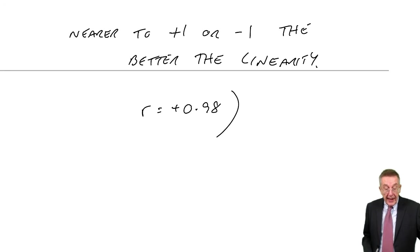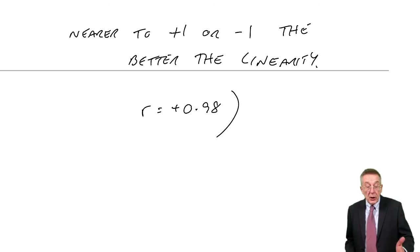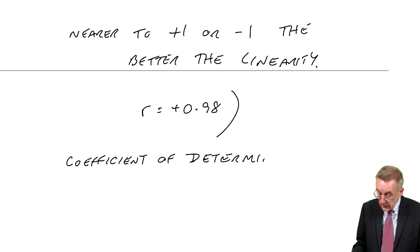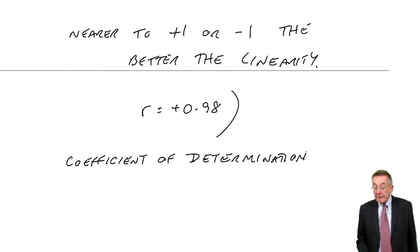Now, finally, on the last page, just one other thing you could be asked. And here you're going to have to learn the formula. Something called the coefficient of determination. The coefficient of determination, as I say, you're not given it on the formula sheet, but it's easy enough to remember. It's R squared. It's the coefficient of correlation squared.